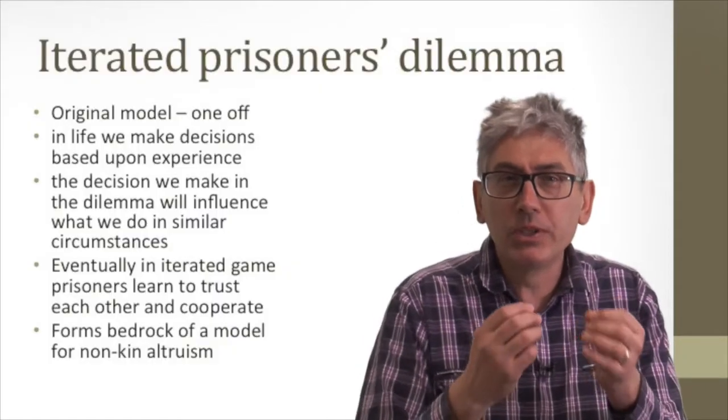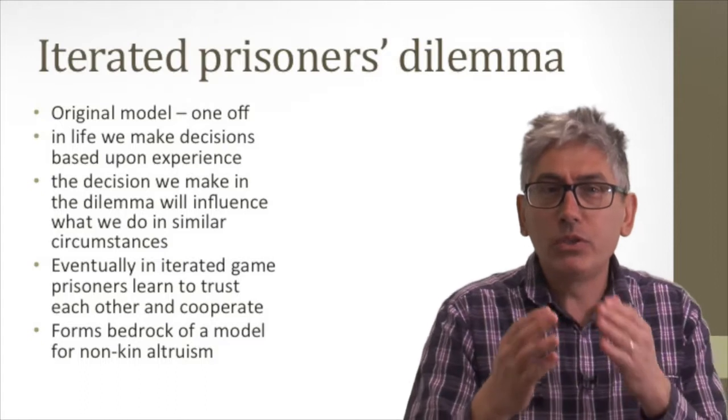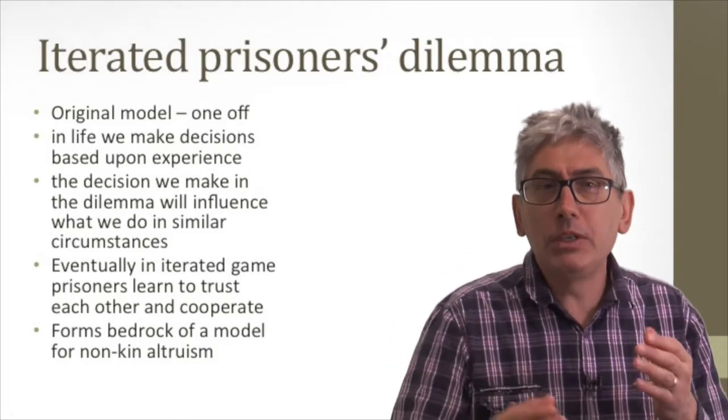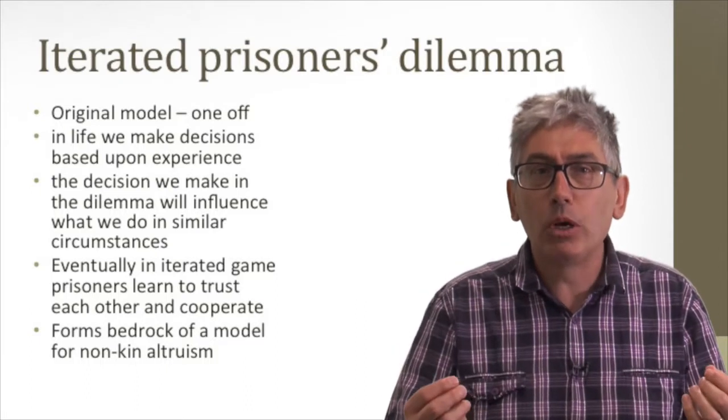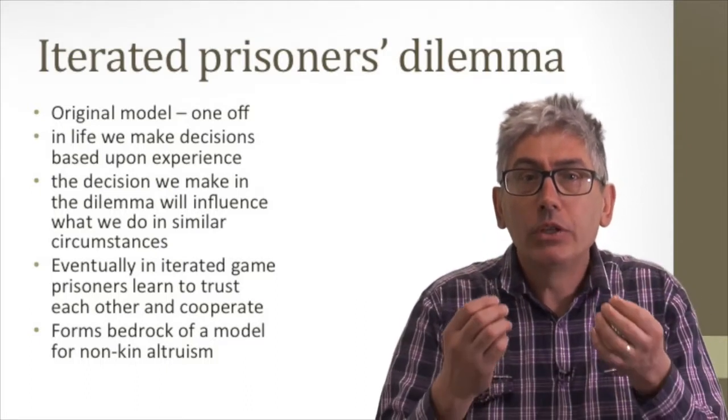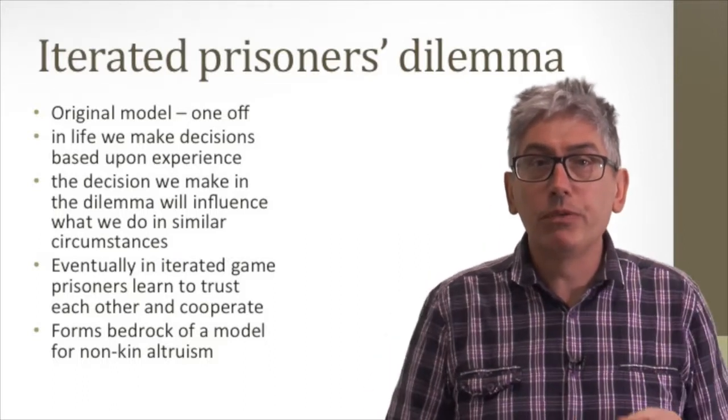But this simple prisoner's dilemma model didn't cut it for altruism. And that was Price's genius. With his ability to mesh different fields of interest and combine his polymath sensibilities, he could see that the model didn't map onto the real, at least not in its simple form.